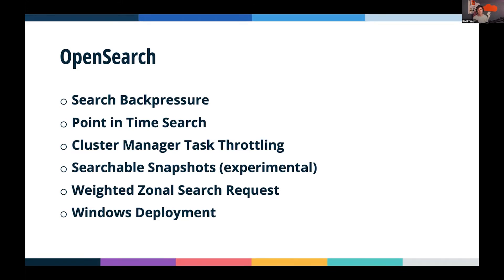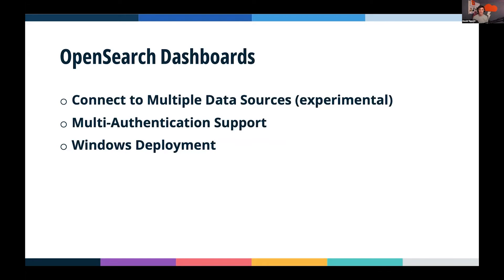Cluster manager task throttling and searchable snapshots are also included — from a high level, searchable snapshots allow you to search your snapshots without having to have the whole index on disk. Weighted zonal search request routing is another reliability feature so you don't send requests to a zone that's struggling. We also now have Windows deployment files, so if you have a Windows mandate from your organization, we now support you.